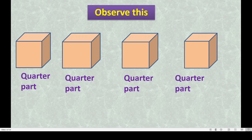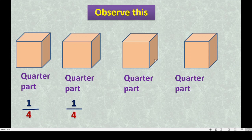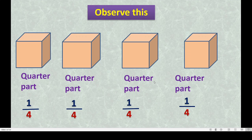How do we write quarter? Total parts are four, so we write one upon four, because this is one part out of four parts. In the denominator, we mention the total parts. Each piece is one upon four. We use the word 'quarter' when we divide one whole into four equal parts. Here, one is the numerator and four is the denominator. This is called the quarter part.